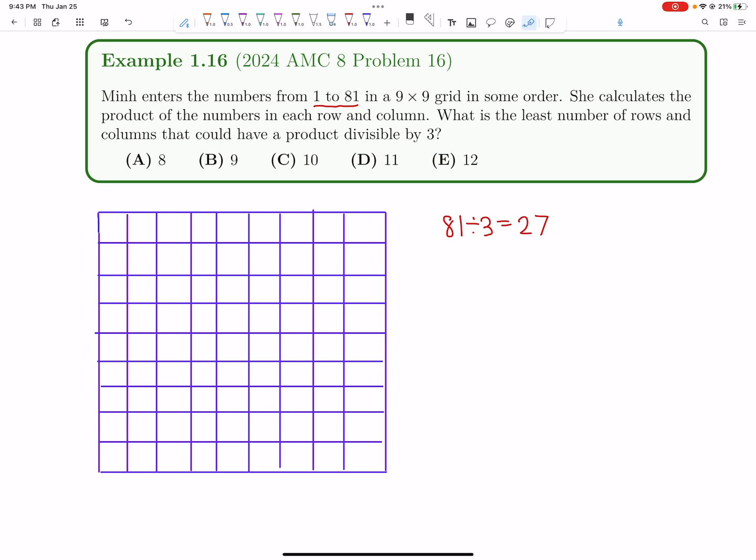So one way maybe is you have three rows of 9, right? Three rows of 9, we shade it all in. So basically, that means we put all the multiples of 3 in these shaded squares. So now, what would be our answer in this case? We have three columns that are shaded, fully shaded, and we have nine rows that are fully shaded. So that gets a total of 12. But can we do better?